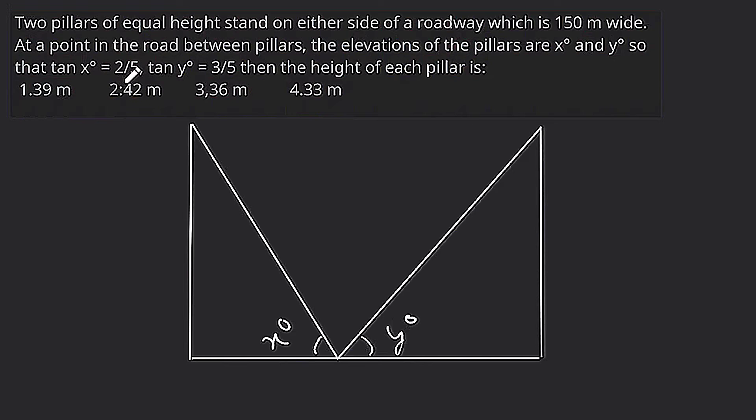Tan x-degree is 2 by 5. Tan theta is perpendicular by base, so 2 by 5 is 2, perpendicular base is 5. And tan y-degree is 3 by 5, so perpendicular is 3 and base is 5.